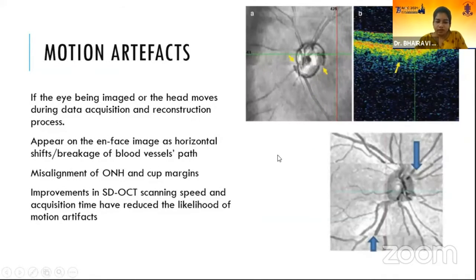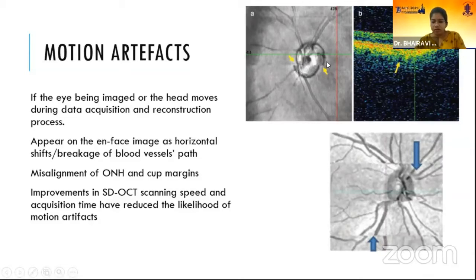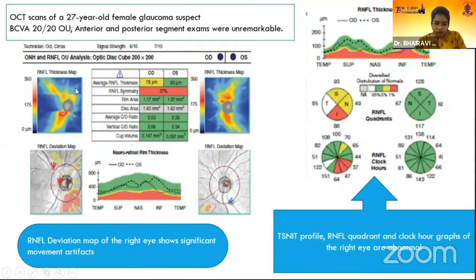Motion artifacts are caused when the eye being imaged or the head moves during data acquisition or reconstruction. It appears on the en face image as a break in the continuity of the retinal vessels, or as a misalignment of the ONH and cup margins on the en face and retinal tomogram. Increased scanning speed has reduced the likelihood of motion artifacts. In this scan, the right eye image is shifted to one side and on the deviation map there is a break in continuity of the vessels, indicating a motion artifact causing an abnormal RNFL profile.